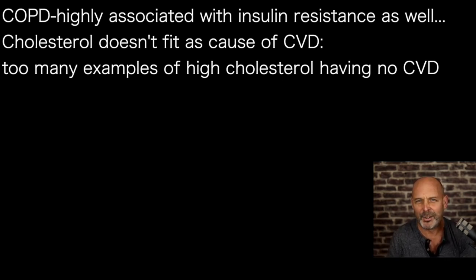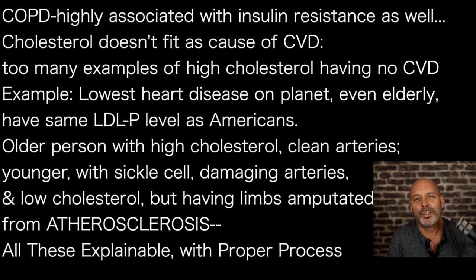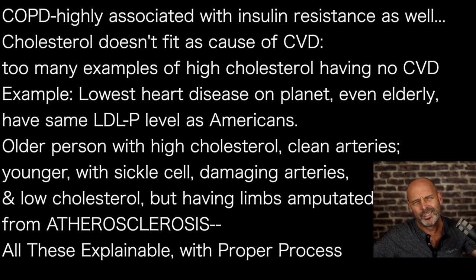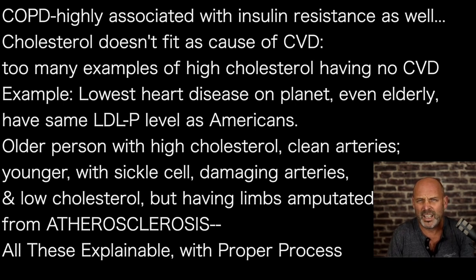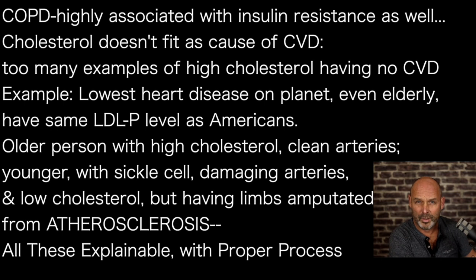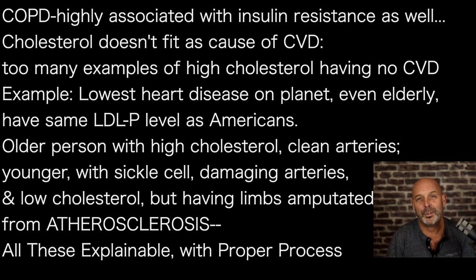All the cholesterol anomalies are explainable. The Katavans have the lowest heart disease on the planet, almost no arterial calcification, and the same LDL particle numbers as Americans who have among the worst heart disease. There's the case of the man with 17 millimole — around 700-800 mg/dL — cholesterol with clean arteries in his late 60s after 20 years of monitoring. And then there's the young person with sickle cell disease — low cholesterol — getting limbs amputated from atherosclerosis. All explainable with the right framework.